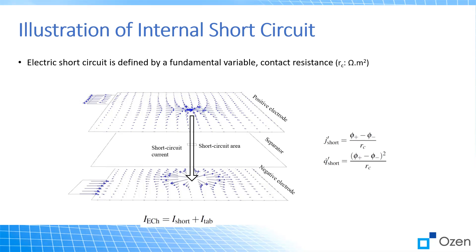Once you have some sort of damage to the battery, this is what's happening inside. In an ideal battery you have a positive electrode, some sort of separator, and then the negative electrode. When the battery undergoes some sort of damage, you get a break in that separator, which allows a large amount of current to pass from the positive to the negative electrode, resulting in those exothermic reactions that cause the temperature to go up.